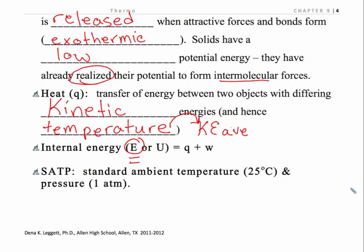The concept of internal energy — most books will use E, a few might use U for this — it's the sum of the heat and the work involved in a process or transformation. We just don't talk about it much at this level. I'm going to save that so that you have something fun and unique to study when you make it to physical chemistry, if you make it that far in your chemistry journey.